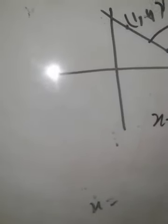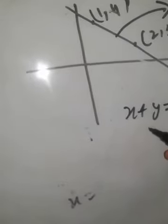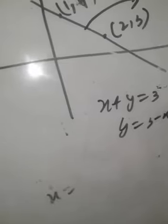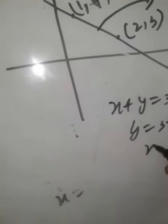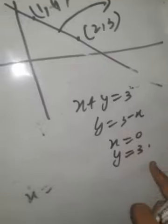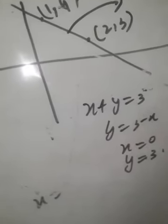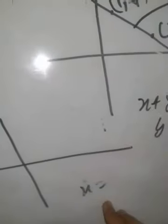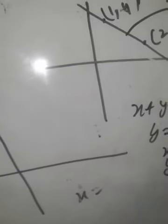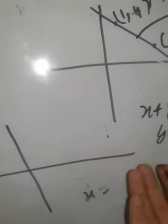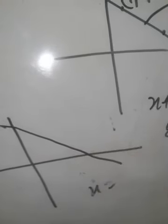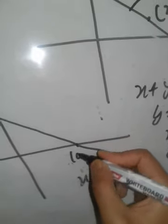Conversely, for the linear equation x plus y equals 3, where y equals 3 minus x, one solution is x equals 0, y equals 3, giving (0, 3); another is x equals 1, y equals 2, giving (1, 2). If this is the graph of the linear equation, the points (0, 3) and (1, 2) can be plotted on it. Every solution can be represented on the graph.